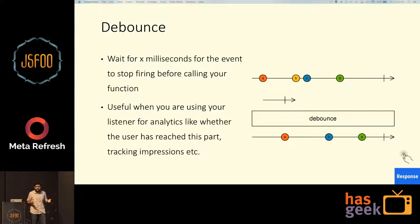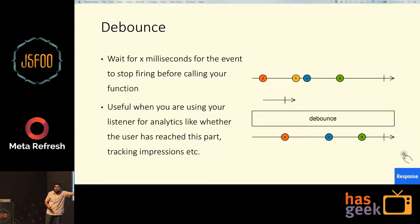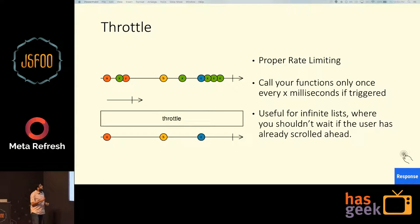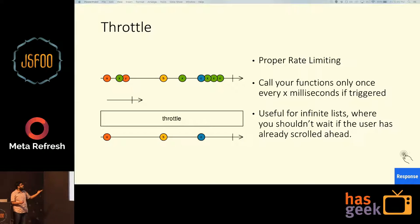Debounce is where you wait for X milliseconds for your event to stop firing, and then you run your function. So in the example, B and C events happened very close to each other, but we waited some milliseconds before actually running our function. Throttle is proper rate limiting — your function runs only once every X milliseconds. Like in this example, X and Y happened immediately after A, but we had already run our function once in that timeframe, so we did not run it again.